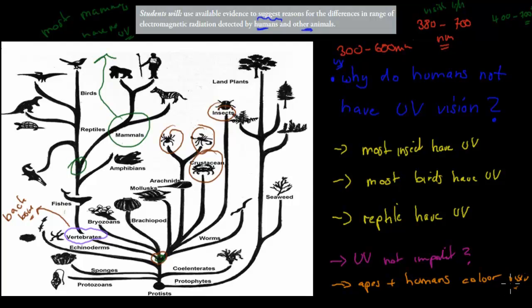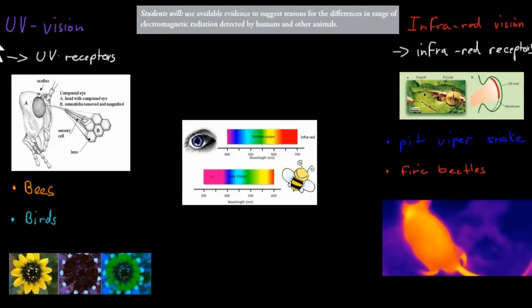So this would be the first step - knowing that we might have lost UV vision at some point. But why have we lost it? That could be because we want to focus on color vision. But why do other animals still have it? What's their purpose of having these different types of visions that they have?